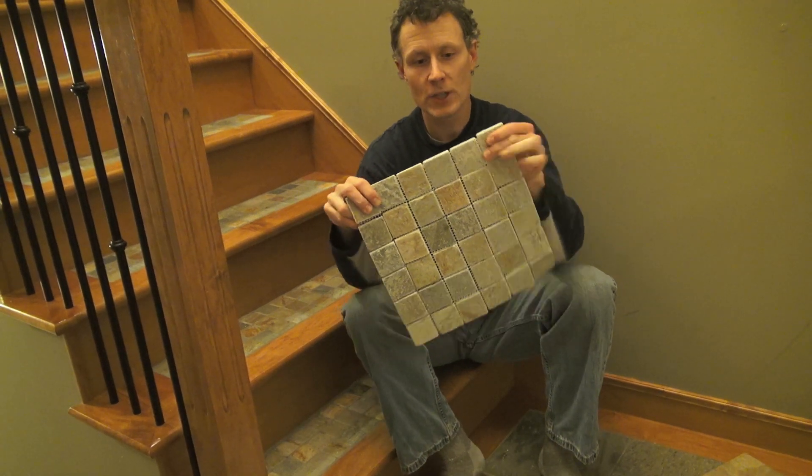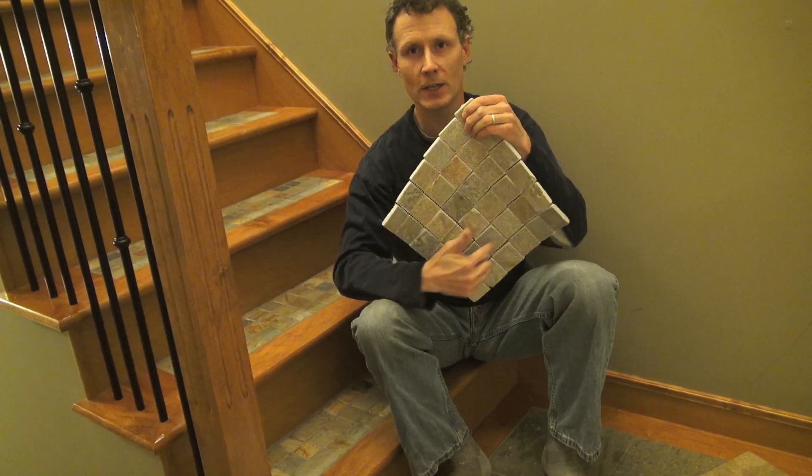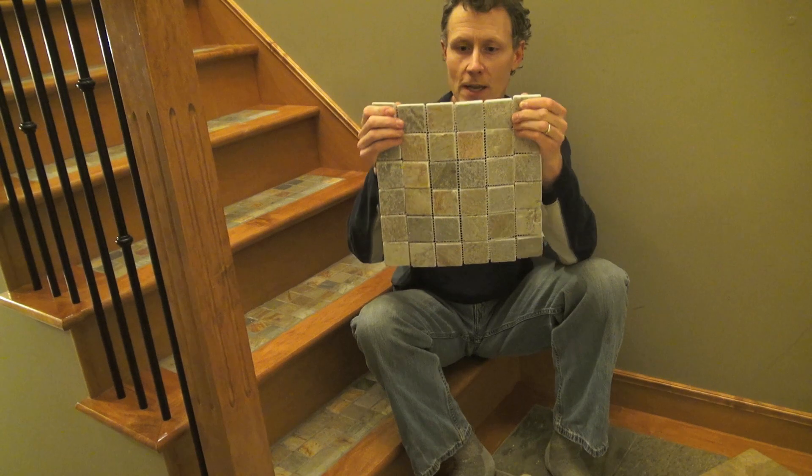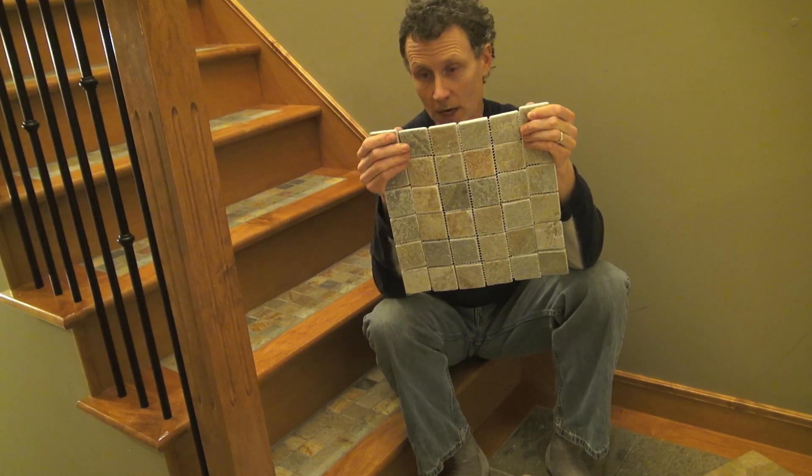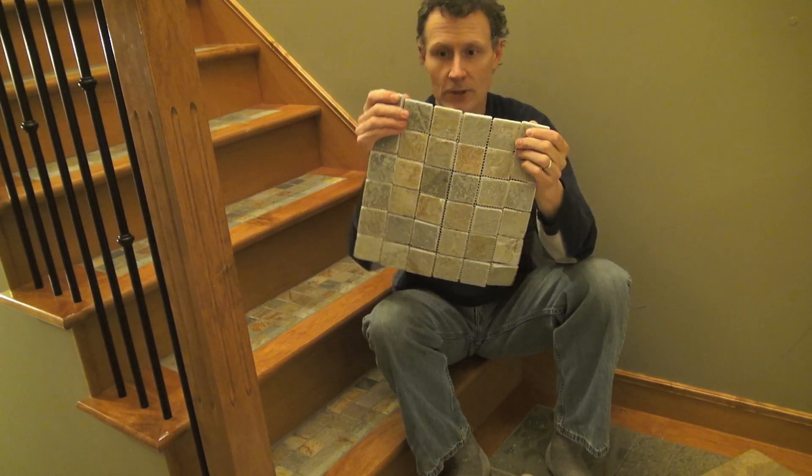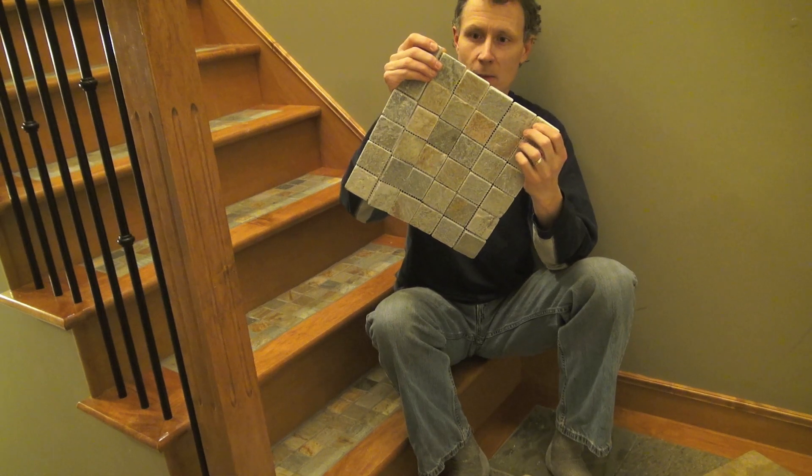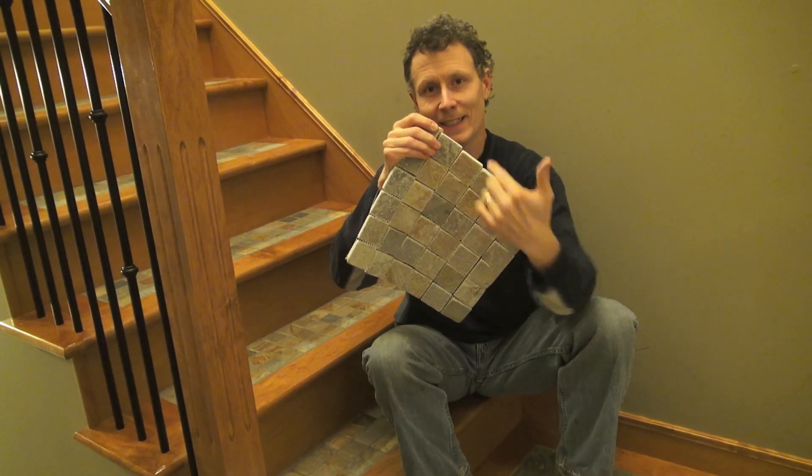This is a sheet of 36 tiles here, 36 individual tiles arranged as a square, as a perfect square. 36 is a perfect square because you can arrange them as a square.